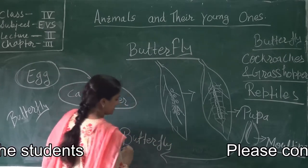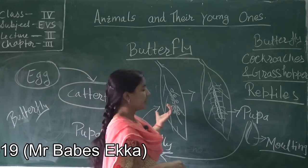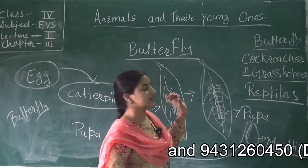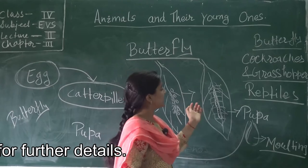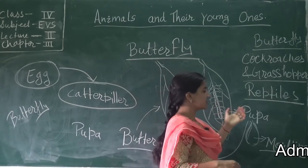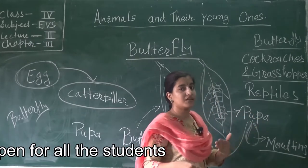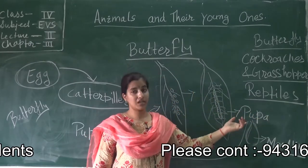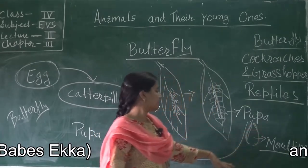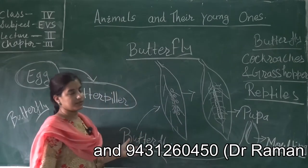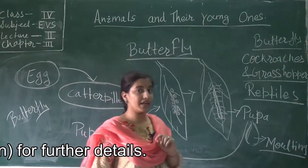Then this butterfly again lays eggs, and the egg becomes a caterpillar again. It then develops a protective covering and the caterpillar becomes a pupa. After several times of the pupa shedding its skin — the process of shedding skin is termed as molting — it becomes an adult butterfly. This is the life cycle of butterfly.